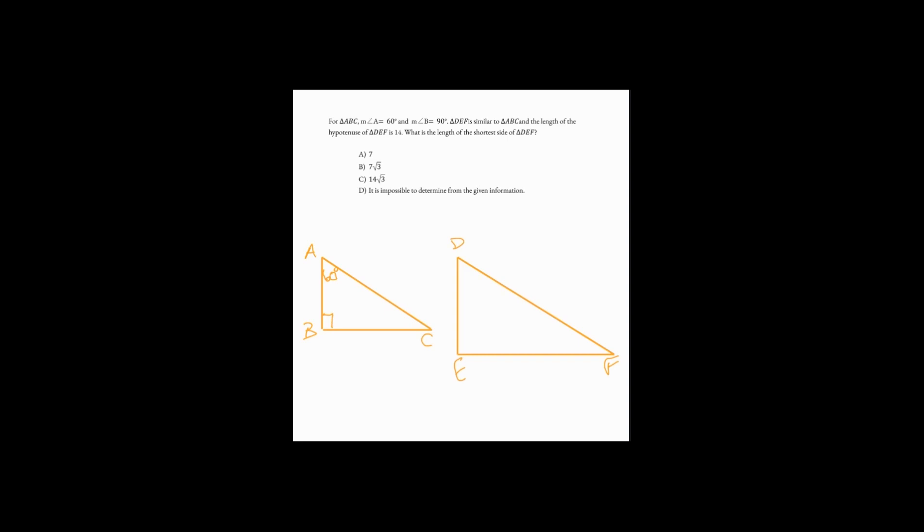Triangle DEF is similar to triangle ABC and the length of the hypotenuse of DEF is 14. The hypotenuse must be the longest side. What is the length of the shortest side of triangle DEF?